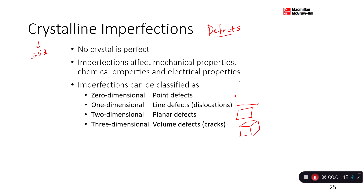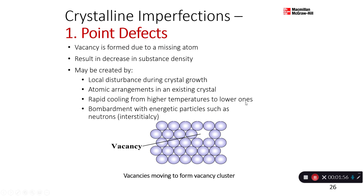The defects are categorized in these four categories — that's what we're going to look at today. First, let's start with the zero-dimensional defects or point defects. For point defects, whatever imperfection is happening on the material is happening on a point basis — for example, at a specific atomic region, that is where the error is happening.